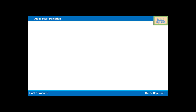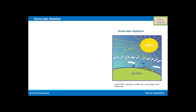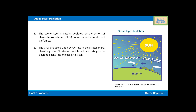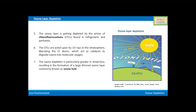Now we will see the ozone layer depletion. The ozone layer is getting depleted by the action of chlorofluorocarbons found in refrigerants and perfumes. The CFCs, that is chlorofluorocarbons, are acted upon by UV rays in the stratosphere, liberating chlorine atoms which act as catalysts to degrade ozone into molecular oxygen. The ozone depletion is particularly greater in Antarctica, resulting in the formation of a large thin ozone layer commonly known as the ozone hole.